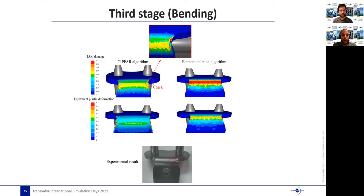Finally, we have the bending stage. Here, the main observation for the element deletion algorithm is that the critical damage value is reached on the whole bending line. On the other hand, for the CEPFAR algorithm, we can only see two tiny locations at the right and left boundaries of the bending line that develop the critical damage value so that tiny cracks are expected to initiate at these locations. And this is confirmed also experimentally where we can see the same cracking pattern that has been predicted with the CEPFAR algorithm.